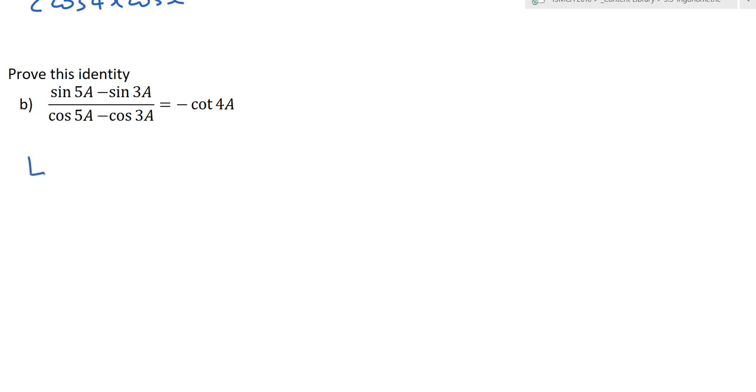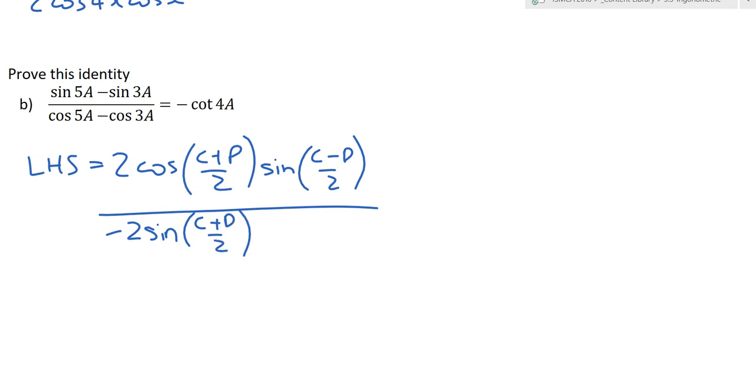And so, that means the left-hand side will be 2 cos(c plus d over 2) sine(c minus d over 2). And that is all over cos minus cos. That is negative 2 sine(c plus d over 2) sine(c minus d over 2). Everyone see what I've done there? I've just chosen those two sums parts to use.